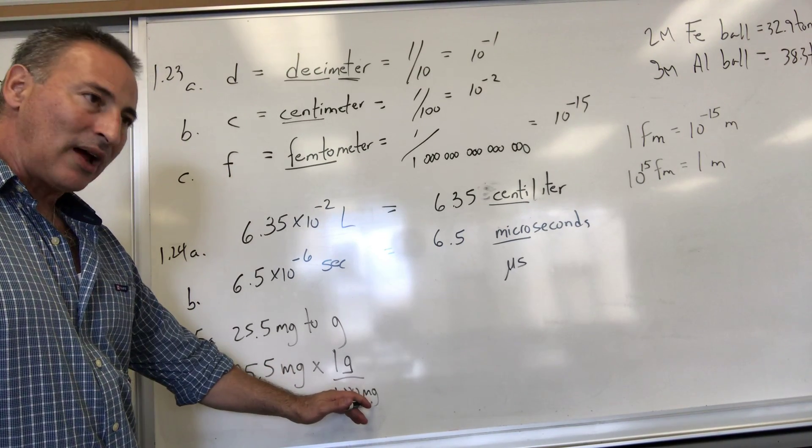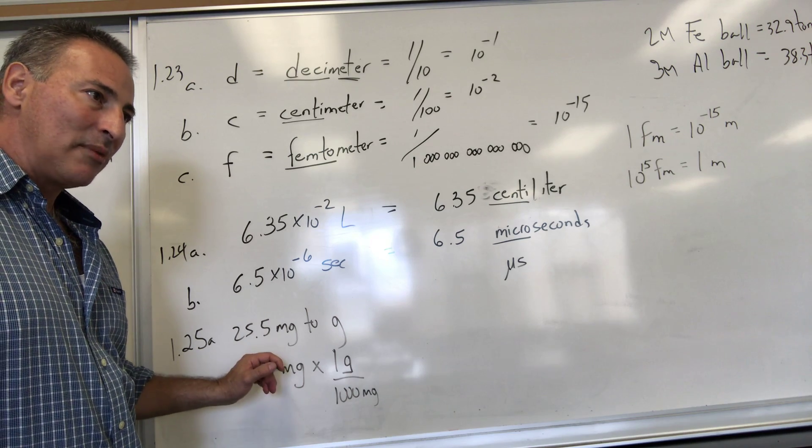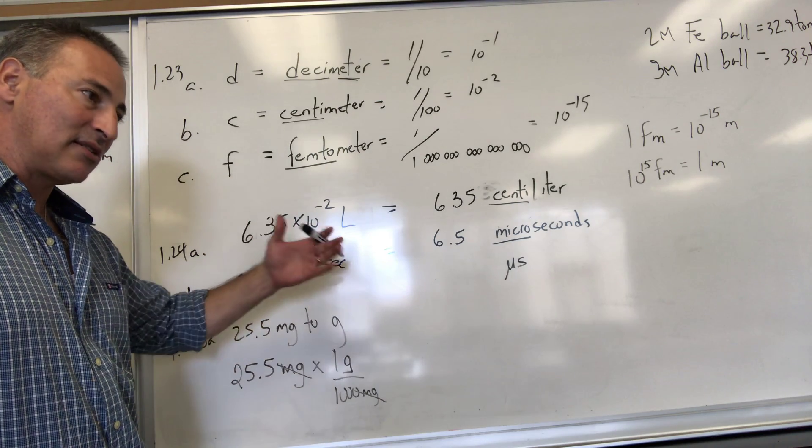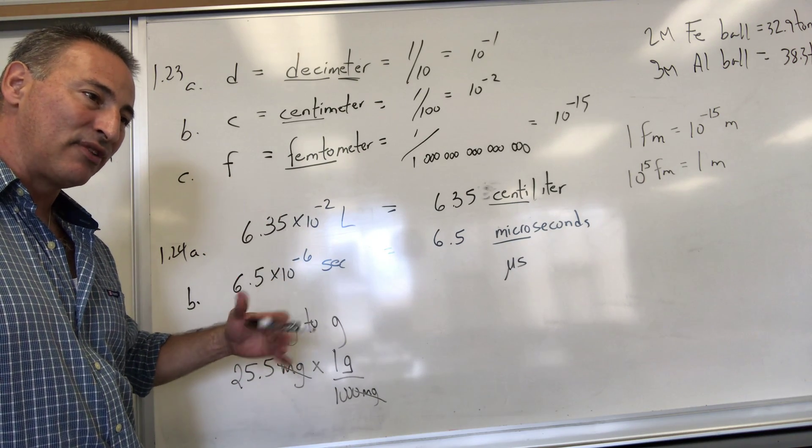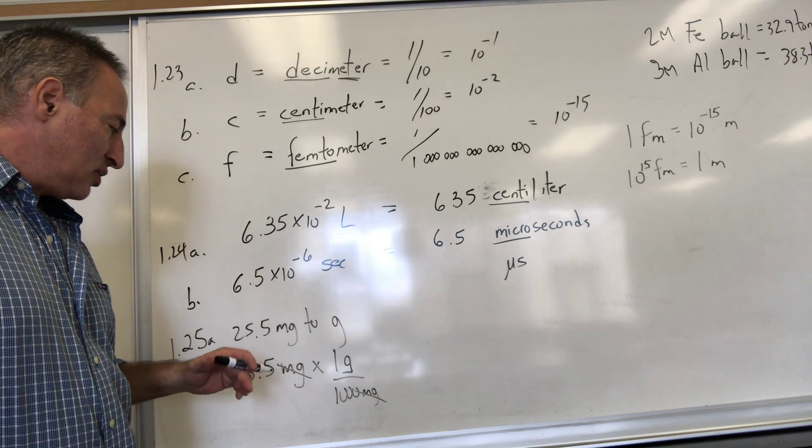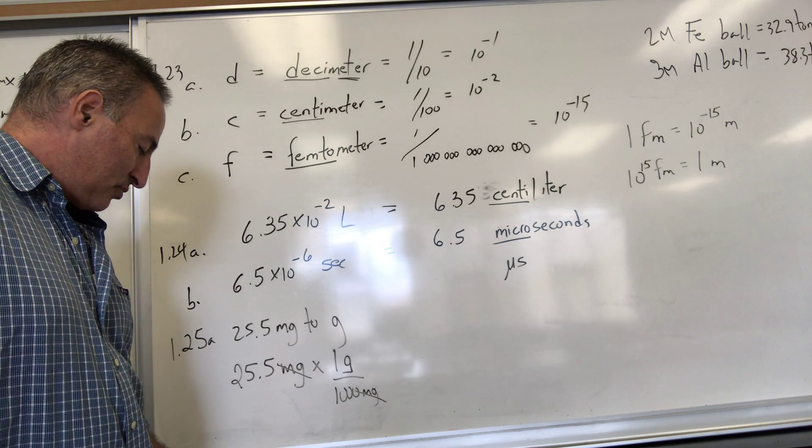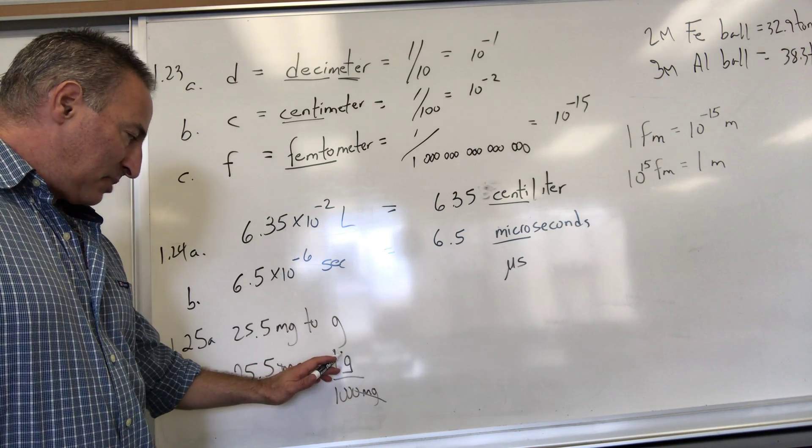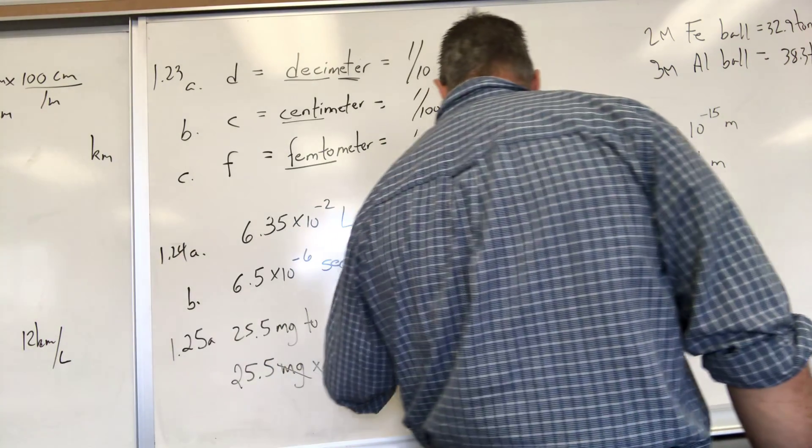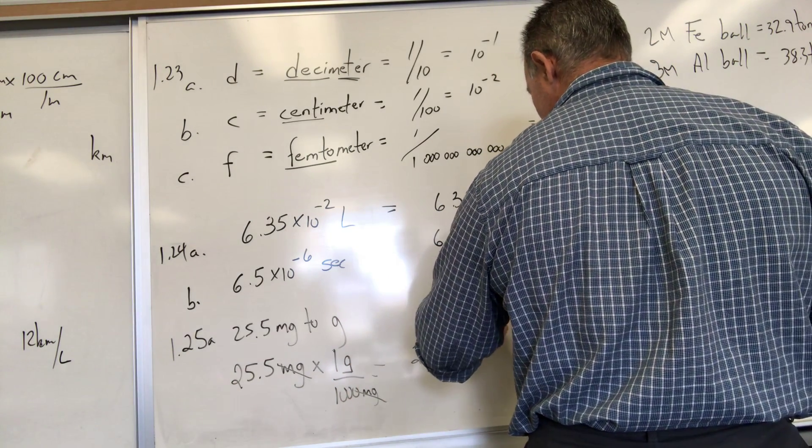How did I know to put milligrams in the denominator? I'm going to harp on this because I know you're not getting it. I want to eliminate the milligrams in the numerator, so the only way that's going to happen is if I put them opposite each other. Because anytime you put something over itself it equals one, and one has no effect on the value of the fraction.